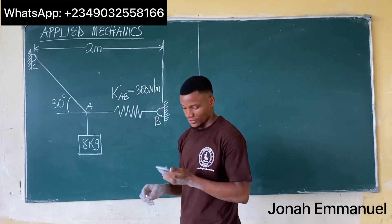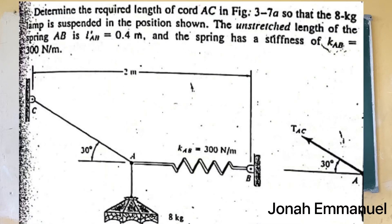For this question, it says: determine the required length of cord AC in the figure below, so that the 8 kilogram lamp is suspended in the position shown. The unstretched length of spring AB is equal to 0.4 meters, and the spring has a stiffness of 300 N/m.